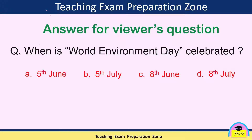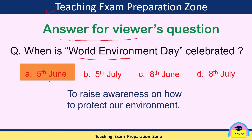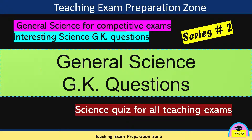Hello everyone, welcome back to my channel Teaching Exam Preparation Zone. The question from the previous video was: when is World Environment Day celebrated? The options were 5th June, 5th July, 8th June, 8th July. The correct answer is 5th June. Every year, 5th June is celebrated as World Environment Day to raise awareness on how to protect our environment.